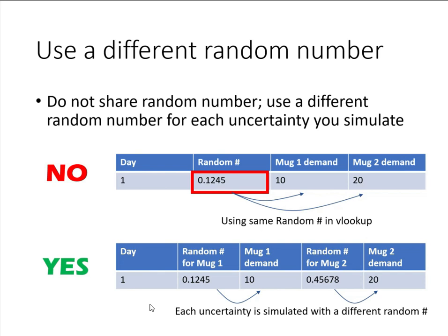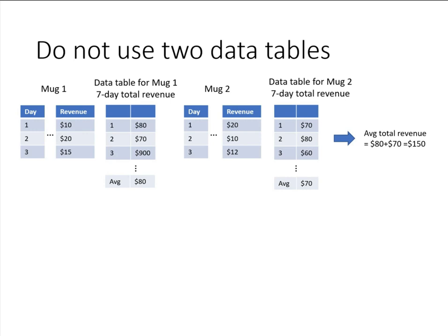Also, you should not have multiple data tables in a model. For example, for mock 1, I simulate the revenue for 7 days and then have a data table to replicate the simulation multiple times — so 80 is the total 7-day revenue in the first run, 70 in the second run. I do the same for mock 2 with another data table. Then I find the average across all simulation runs: 80 for mock 1 and 70 for mock 2, giving a total revenue of 150. You do not do this.